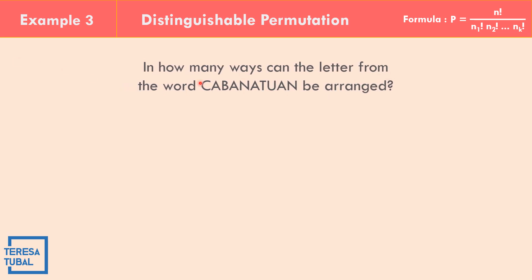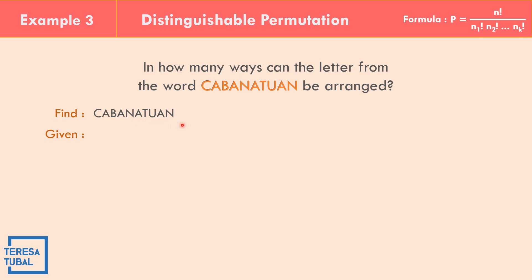In example number 3, in how many ways can the letters of the word KABANATUAN be arranged? Counting the letters gives n equals 10. Checking for repetitions: A appears 4 times, N appears 2 times. The letters K, B, T, and U each appear only once, so their factorials equal 1 and we only need them in the denominator as A factorial and N-sub-1 factorial.